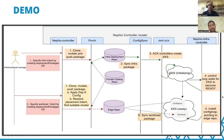As the controller curates and uploads the curated package to the infra deployment repo, Config Sync automatically starts syncing that package. As a result, the Crossplane controllers from AWS come into action and start creating the resources that comprise the EKS cluster. This covers how the EKS cluster orchestration is automated. But that is not enough for workload orchestration — we also have to prepare these clusters for workload deployment, and that process is automated as well.